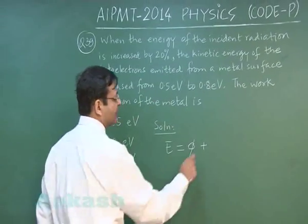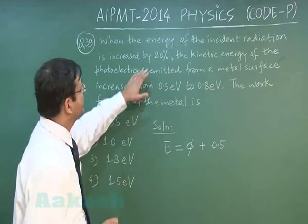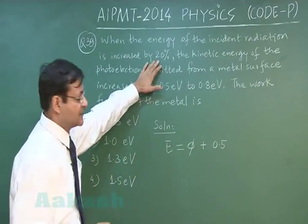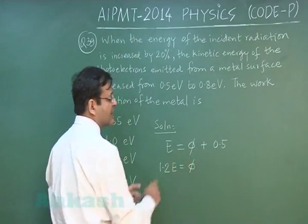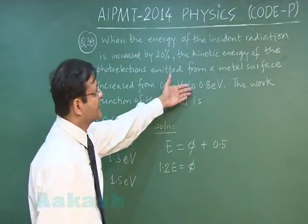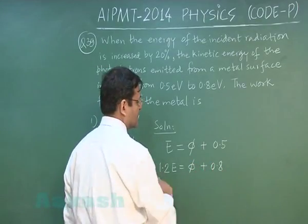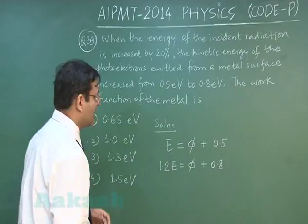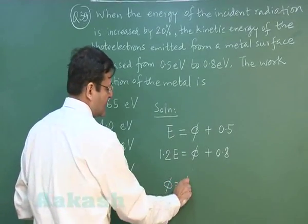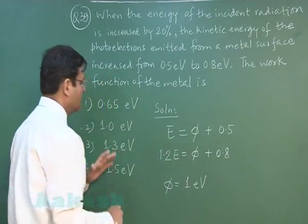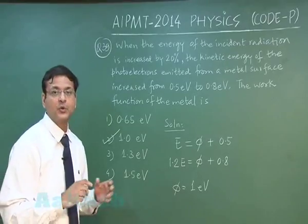Initially, E = φ + 0.5. When energy is increased by 20 percent, the new energy is 1.2E = φ + 0.8. Solving these two equations simultaneously gives the work function φ = 1 electron volt, and therefore the correct option is option number 2.